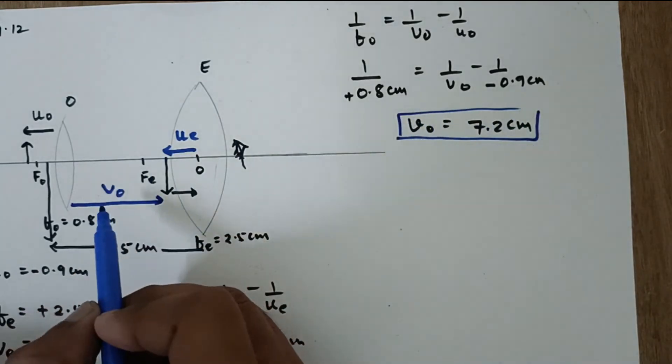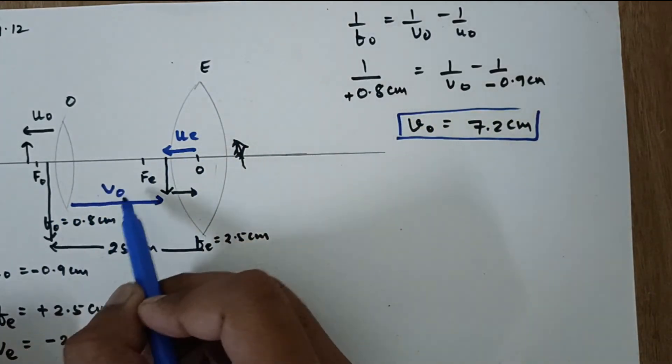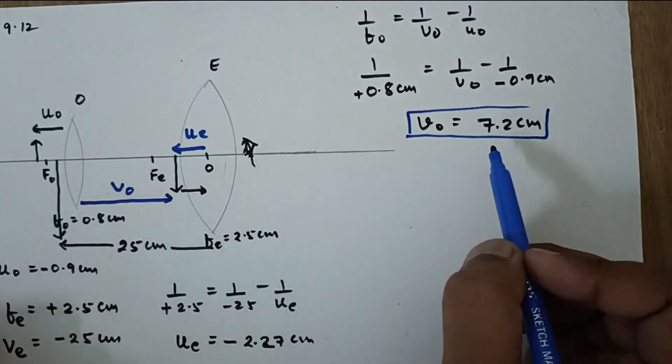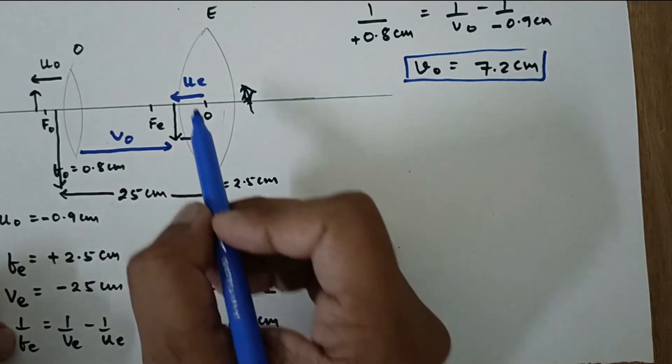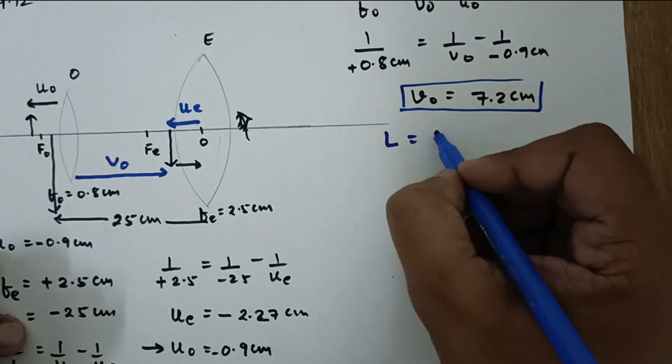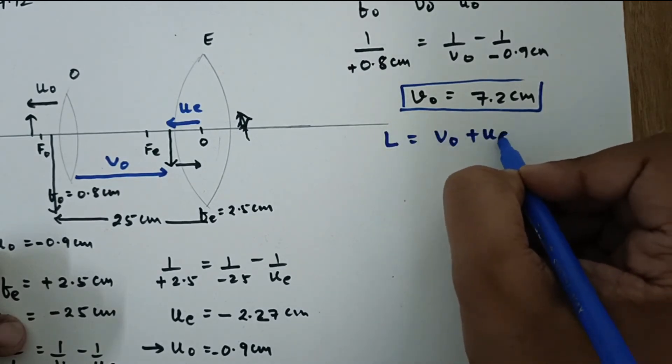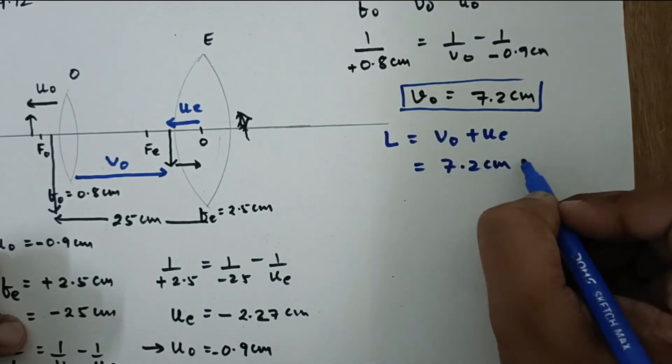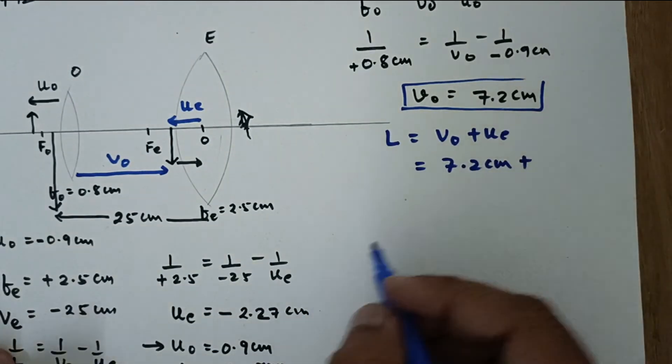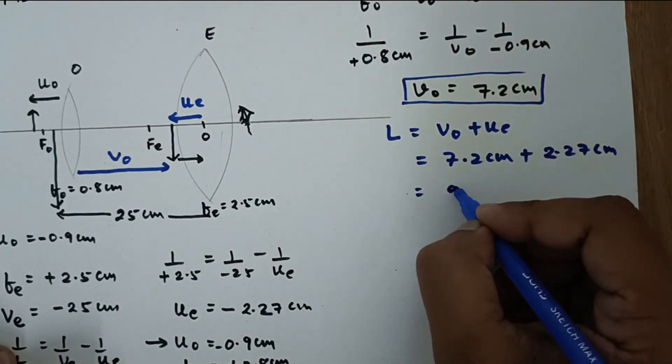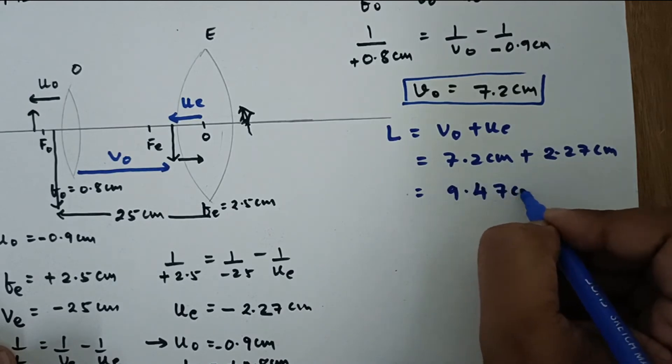So which means that this image for this lens, this distance is VO and that is this one. Now the separation between these two lenses is VO plus UE. This plus this one. Now this distance we found out and this distance UE also we found out. So the distance between both the lenses is VO plus UE. So I should say 7.2 cm plus the UE which is 2.27 cm. So it is 9.47 cm.